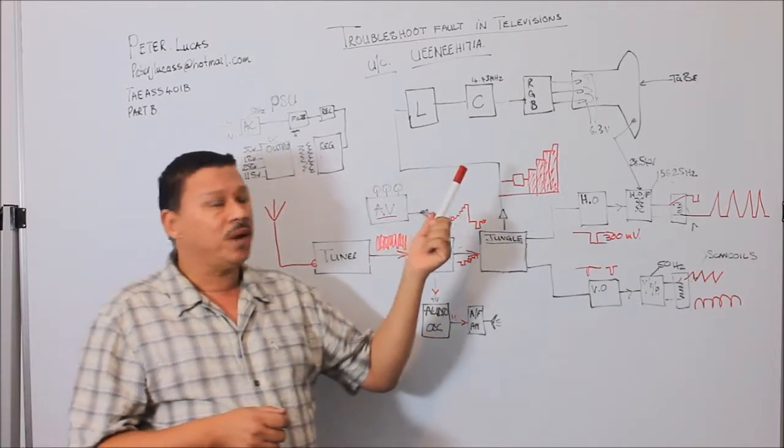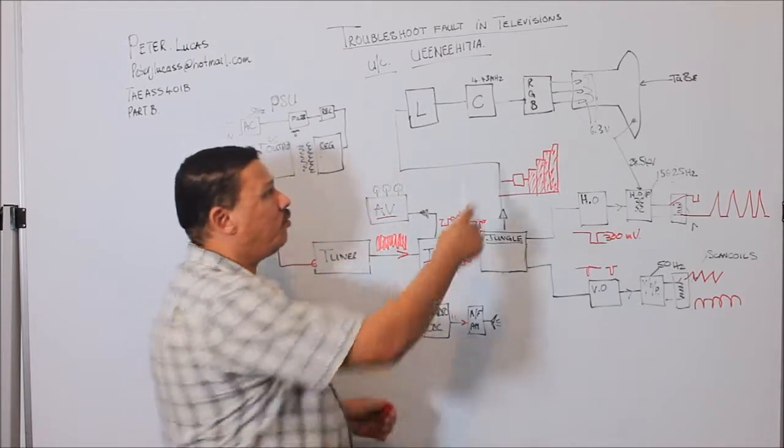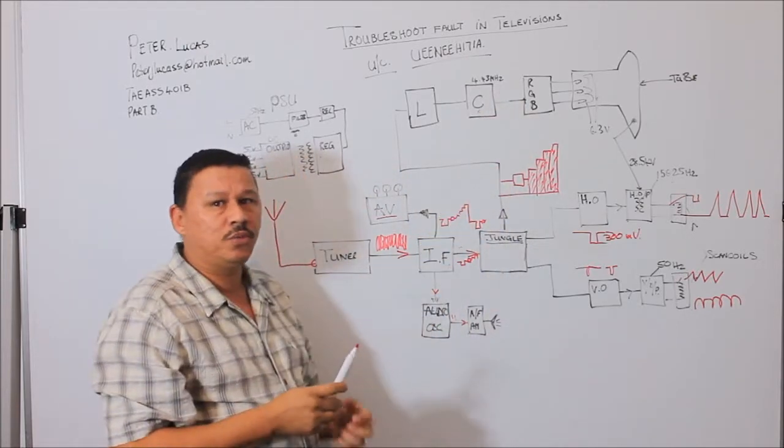If you have a black and white picture, the type of faults that you could have is the chroma line circuit could be faulty.